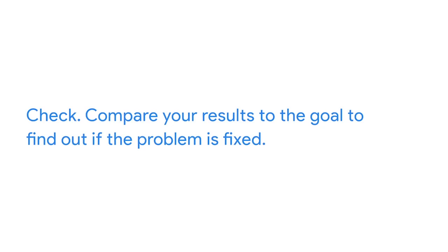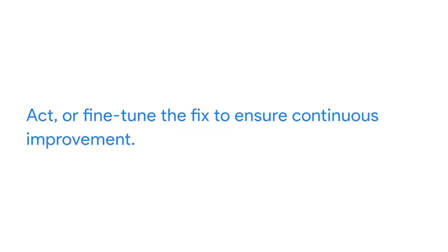The next part of this framework is check: compare your results to the goal to find out if the problem is fixed. You wait one week and notice if the sales numbers go up for that plant. If they did, your hypothesis is correct, and you've saved some plant lives and helped Office Green avoid financial loss. And finally, act — or fine-tune the fix to ensure continuous improvement. In our example, you decide to reorganize the website so that in the future, all overstocked plants will get a prominent place on the website.